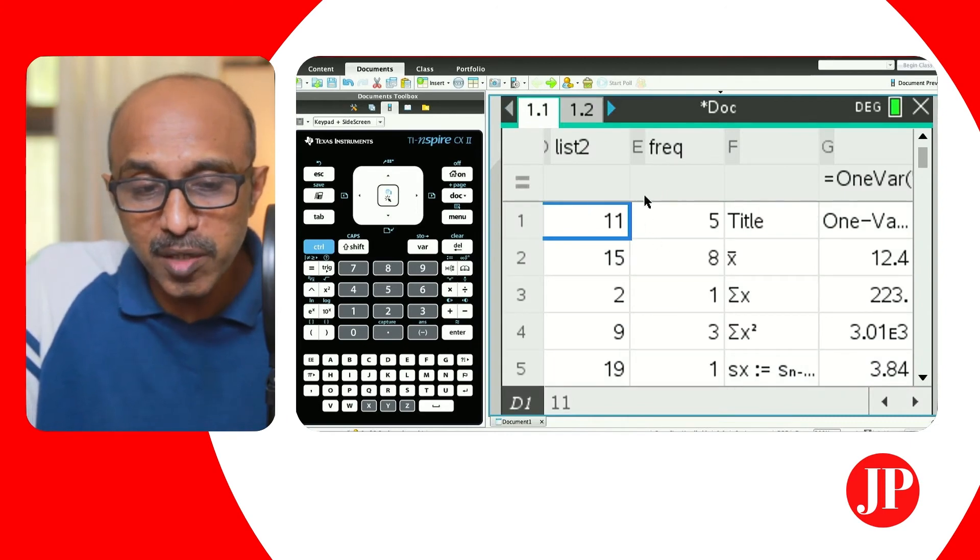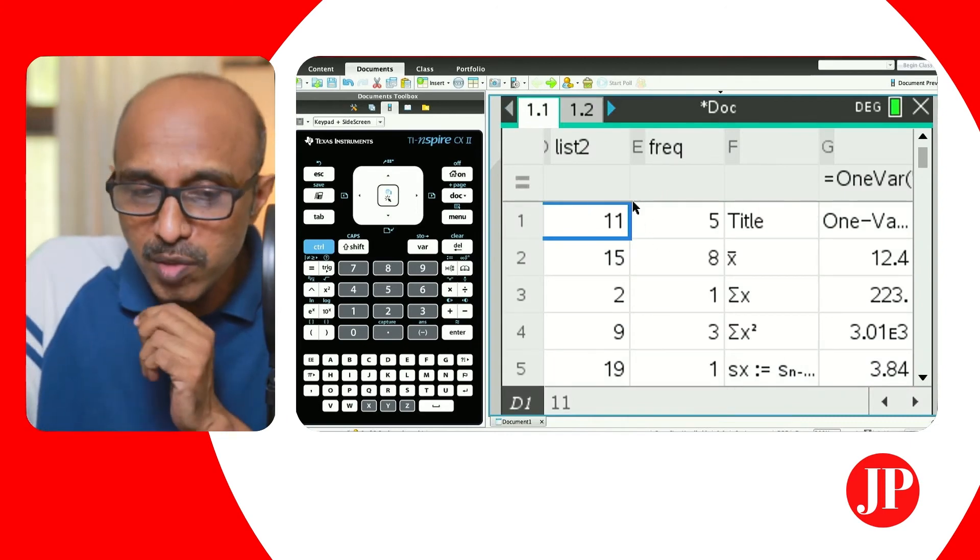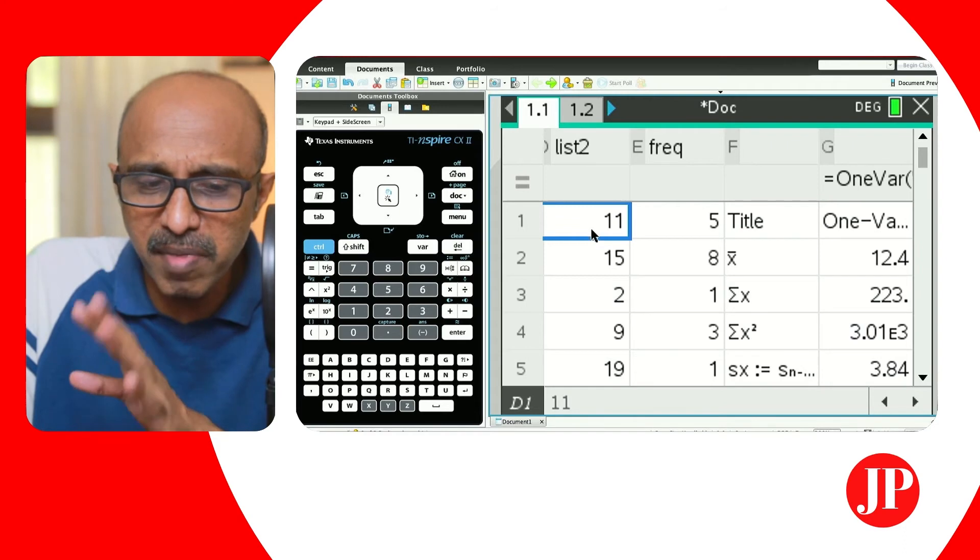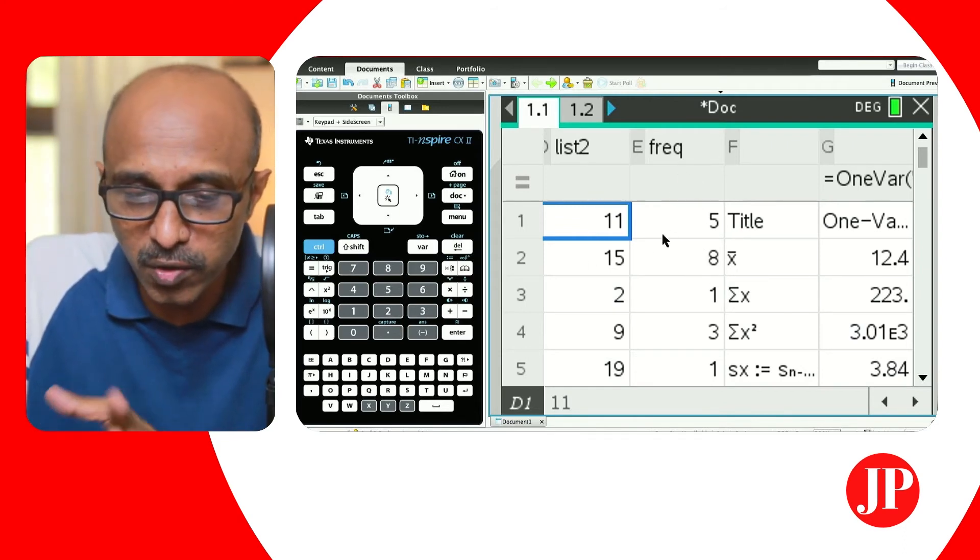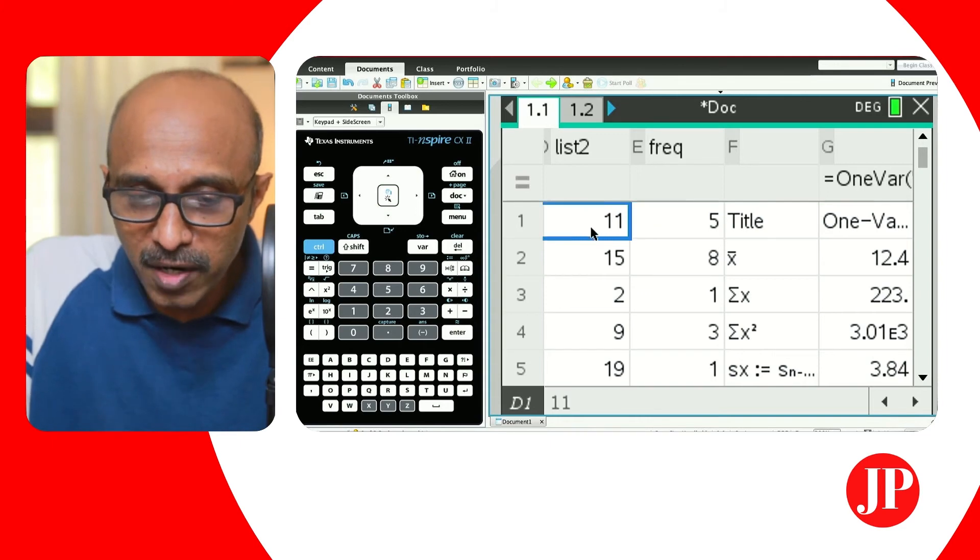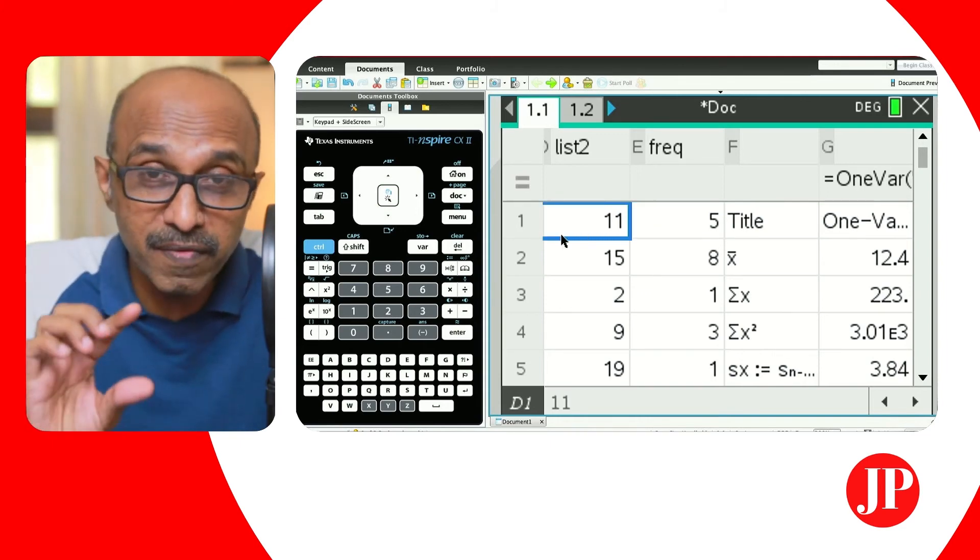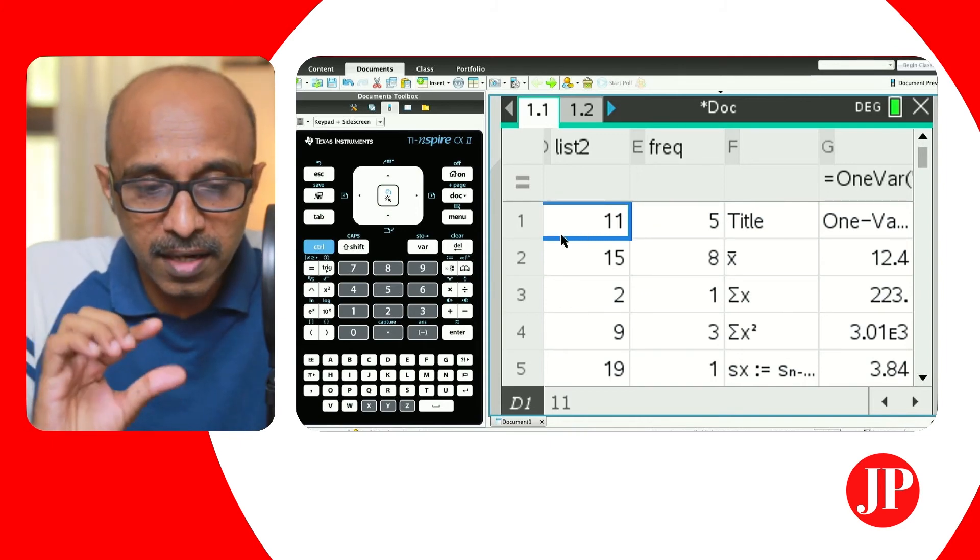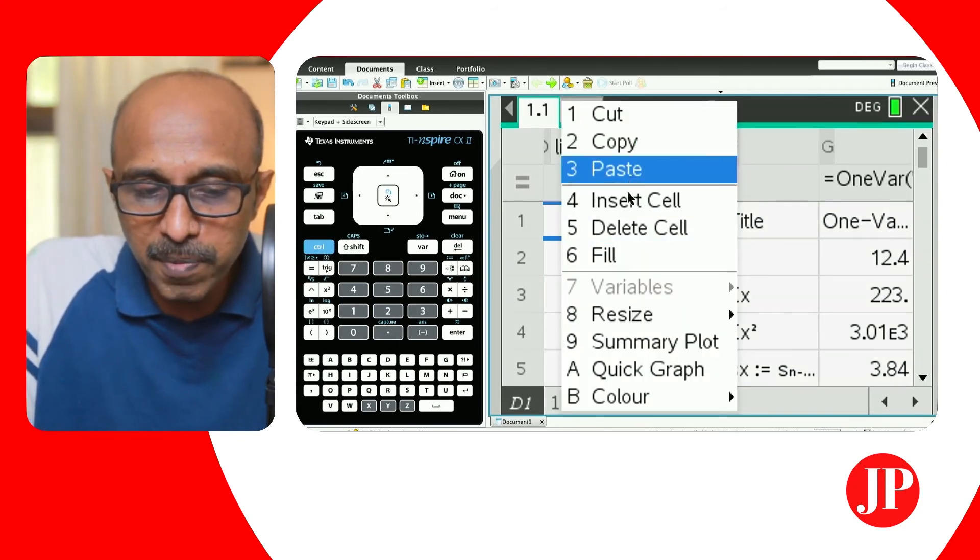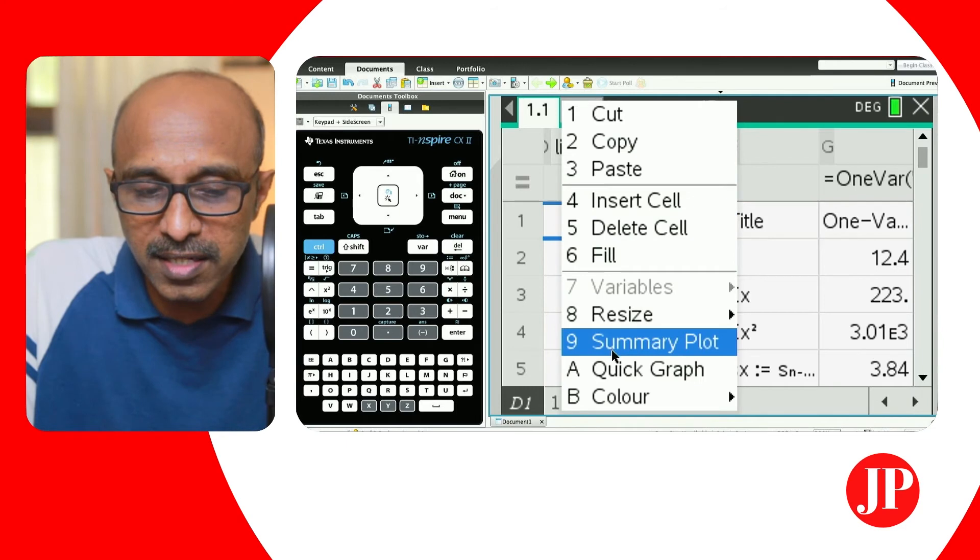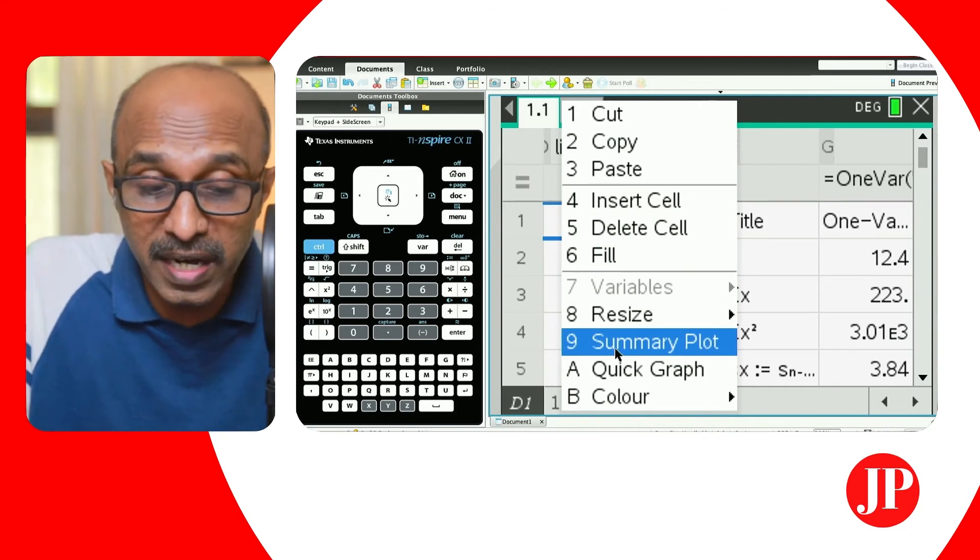Another thing which I want to show you, if you go back to that list and spreadsheet page, especially if you have a frequency distribution, you remember this thing. This was just made up marks for a test out of 20 and the students, the frequency, the students who got those marks. So if you're on that particular list, if I just hit right click, and by the way, right click on your handheld is control menu. So if you go right click, the first few options seem very, very, very standard, but look at this thing called summary plot.